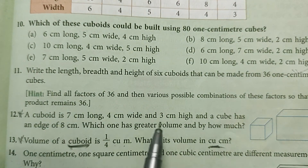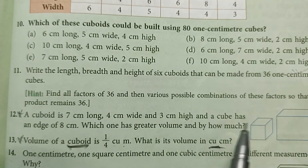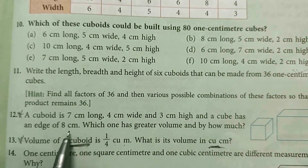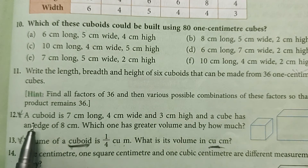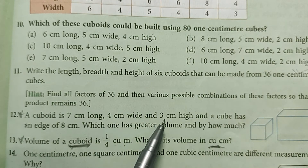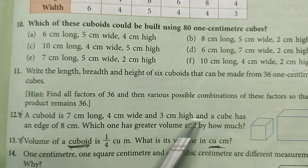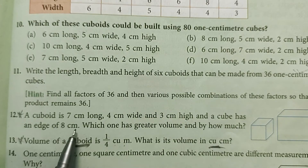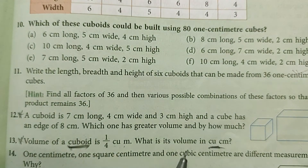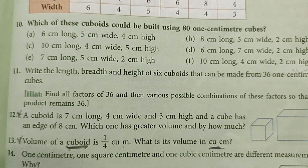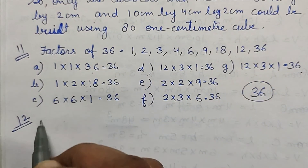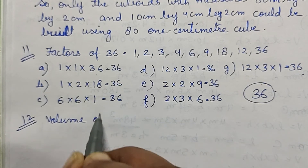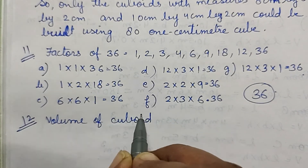Question number 12: a cuboid is 7 centimeter long, 4 centimeter wide, and 3 centimeter high, and a cube has an edge of 8 centimeter. Which one has greater volume and by how much? We need to find the volume of both, then find the difference.